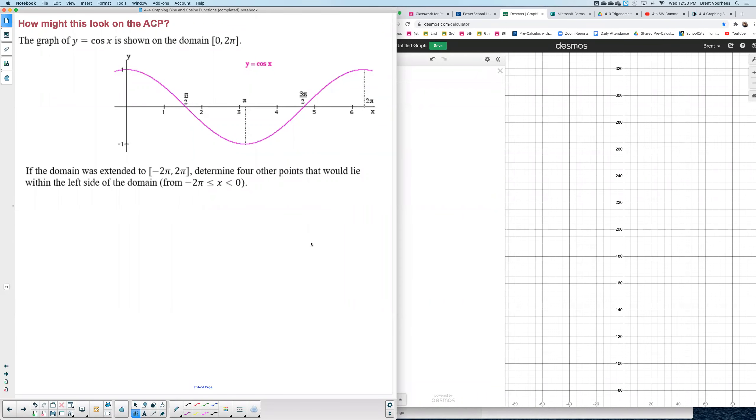All right let's take a look at how we might get tested on this. So we've been looking at graphing cosine and sine functions and this particular one says the graph of cosine x is shown on the domain from zero to two pi.